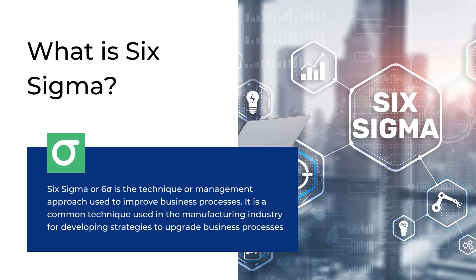It is a common technique used in the manufacturing industry for developing strategies to upgrade business processes. It mainly focuses on quality, where the organization's errors or defects are identified to improve the business. Reducing errors or defects is the primary objective of implementing Six Sigma processes. Companies can increase revenue or profits with increased quality by reducing the faults in their products.